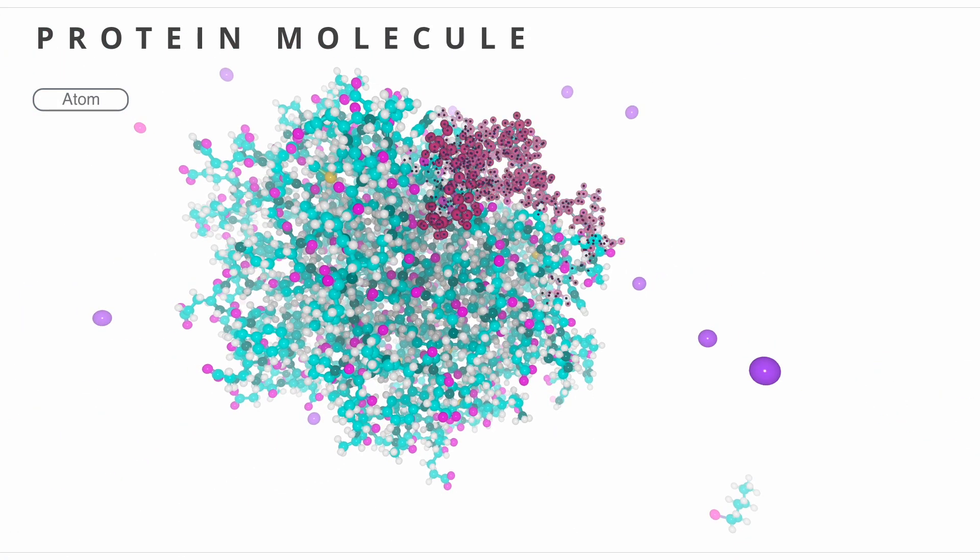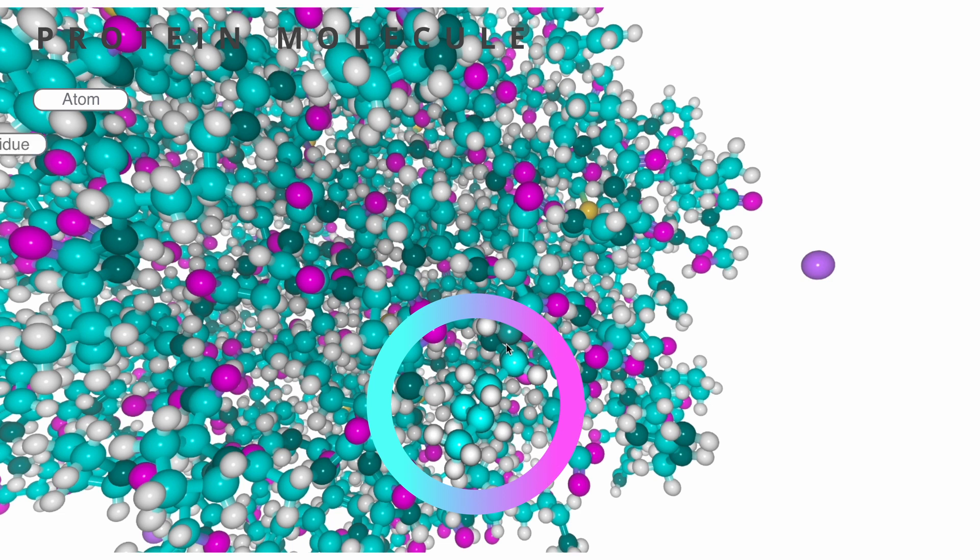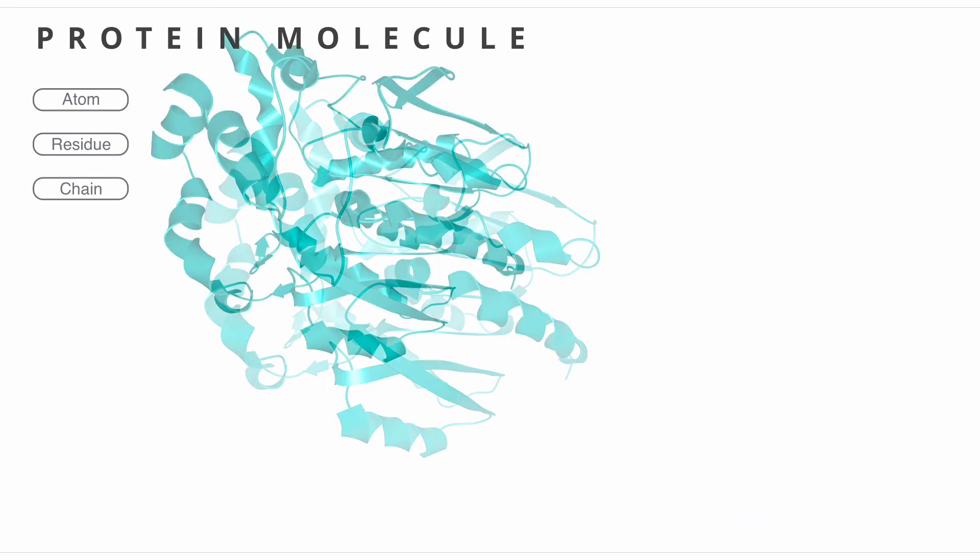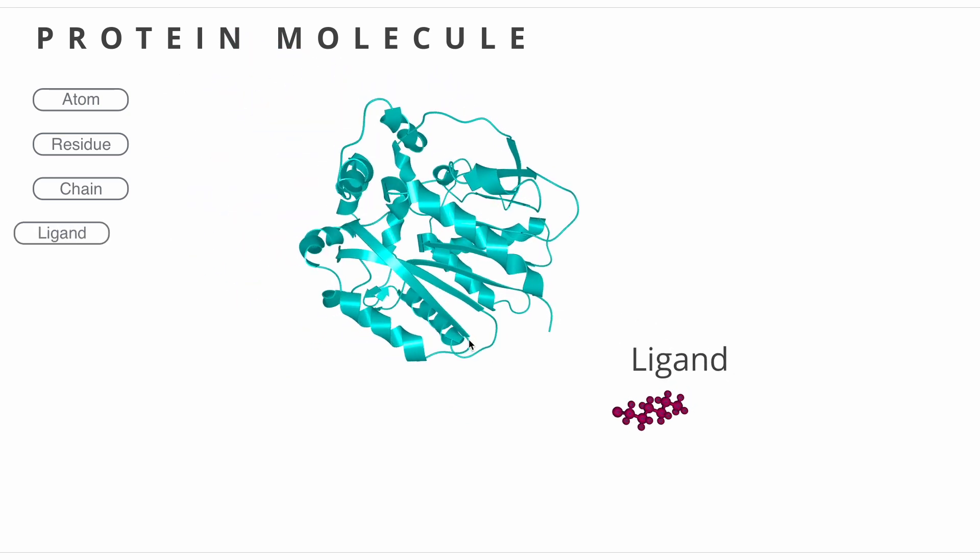We can go atom by atom but it would not be efficient. Instead we should expand our vocabulary and label groups of atoms as amino acid residues which combine into chains. The small molecule on the bottom right is called a ligand.